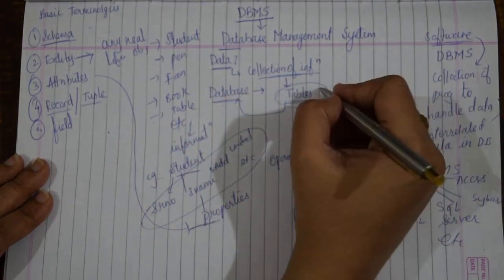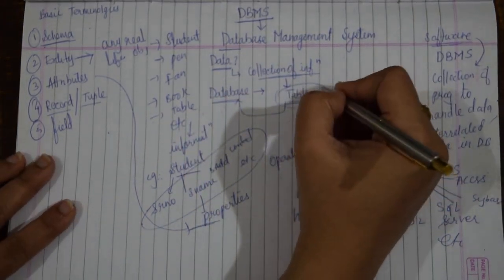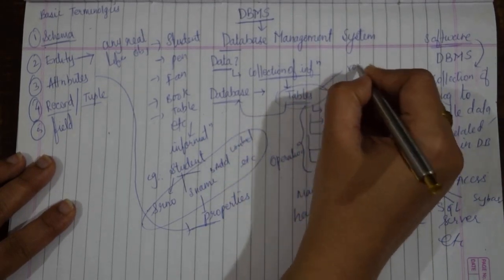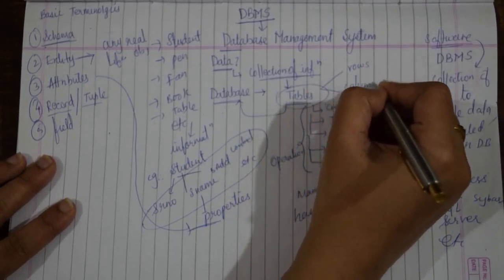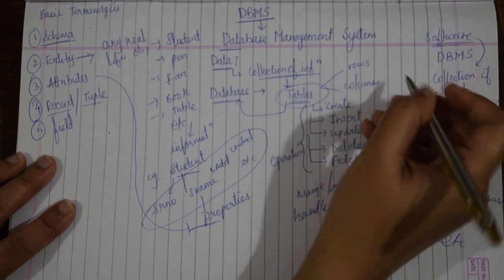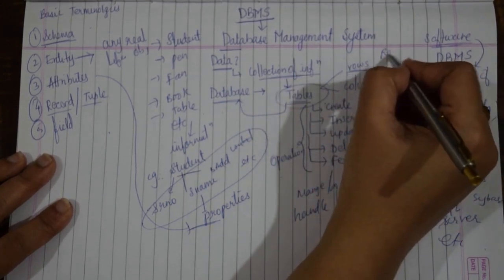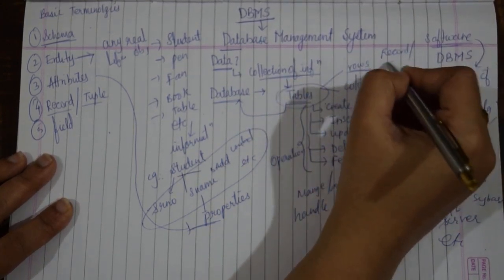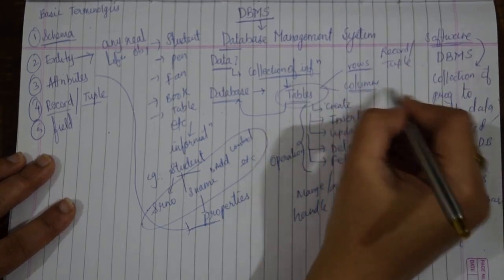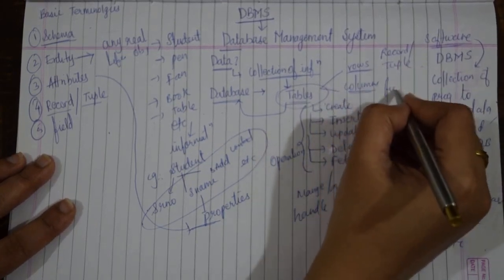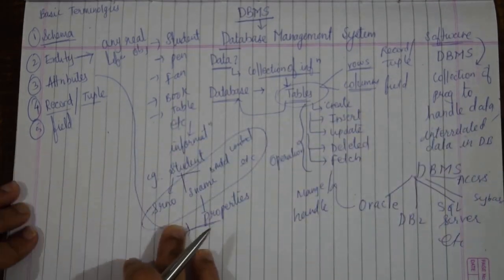Now, a record: we have seen that a database is a collection of tables, meaning a collection of rows and columns. A row in a table is called a record or tuple, and a column in a table is called a field.